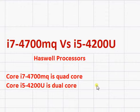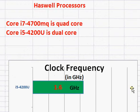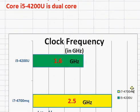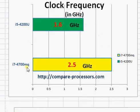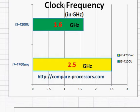The i7-4700MQ is much faster than the 4200U part. In terms of the base clock frequency, the 4700MQ is much faster than the 4200U, not to mention the fact that the MQ is quad-core. Higher clock frequency as well as double the number of cores makes the MQ way faster than the U part.